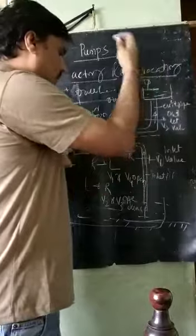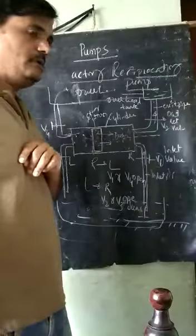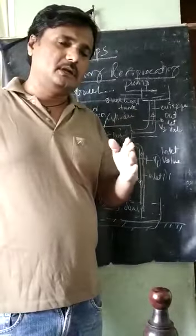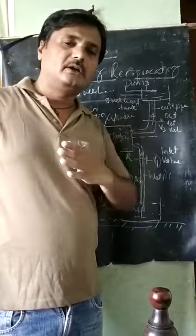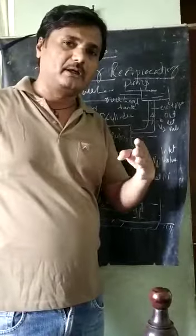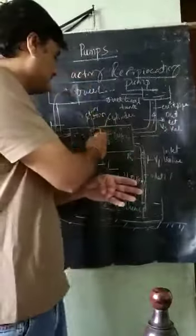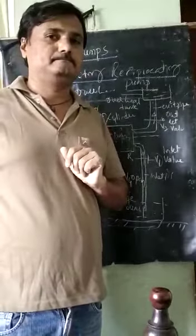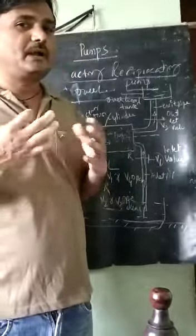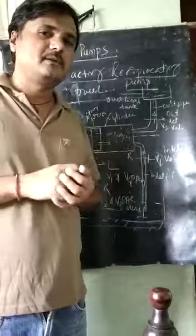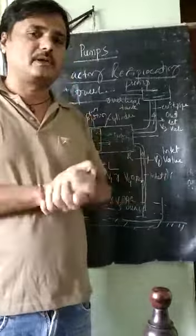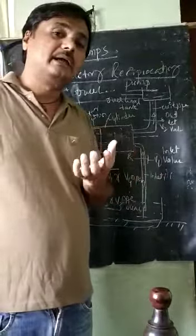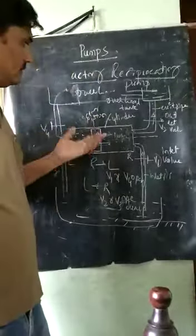So whether the piston is moving to the left side or right side, when the reciprocating action is happening, both surfaces of the piston are utilized to lift the water. Based on the timing, opening and closing of valves happens. That is why it is called a double acting reciprocating pump.